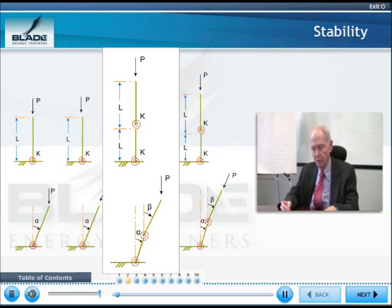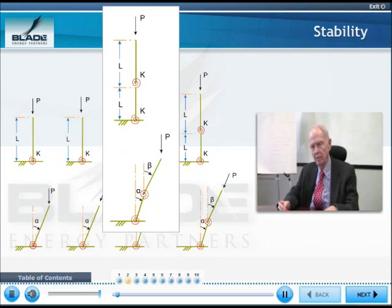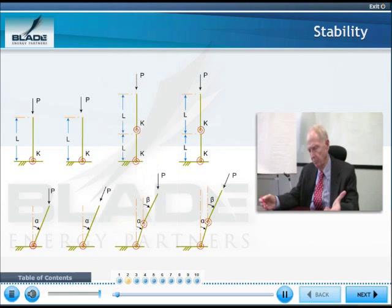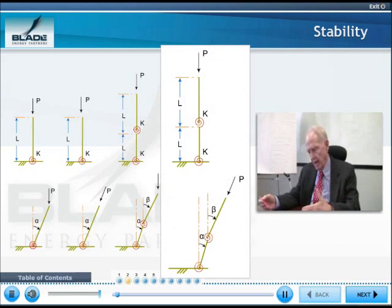And I get two degrees of freedom, alpha and beta being the coordinates I'm going to use. And then, this analogous thing for the last problem, except that it has a follower load.